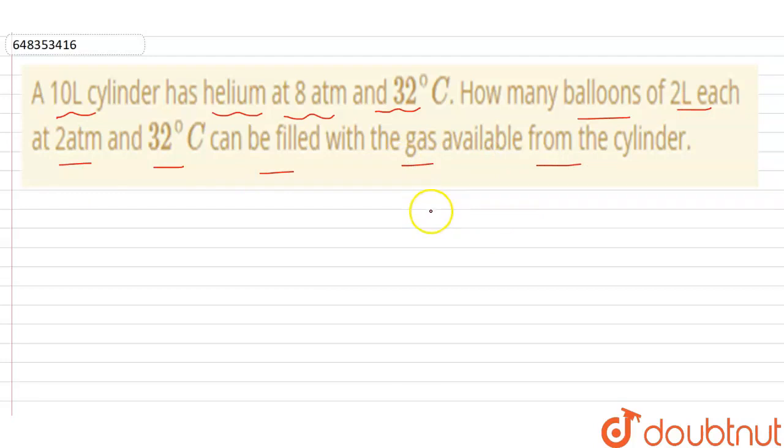So basically we can see that the condition is the same, but PV is different - pressure and volume is different for balloon and cylinder of helium. So first of all, we will calculate the PV of balloon, so the pressure into volume of balloon.